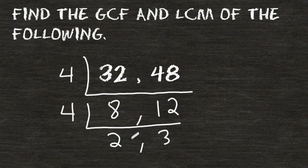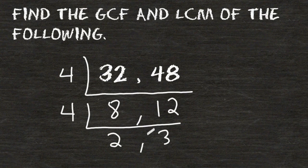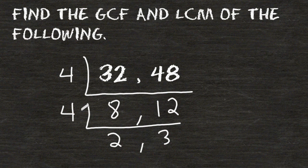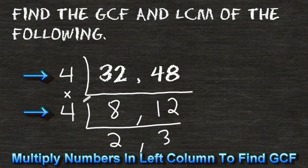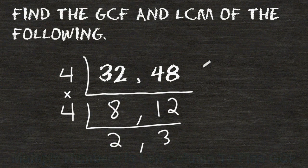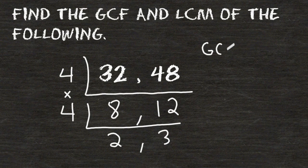When the two numbers at the bottom only share a common factor of 1, you have broken down the numbers as far as they will go. So then you go to the left-hand column here, and you take all of your numbers and multiply them together, and that will give you the greatest common factor of the original two numbers. So, we would say that the GCF of 32 and 48 is equal to 16.